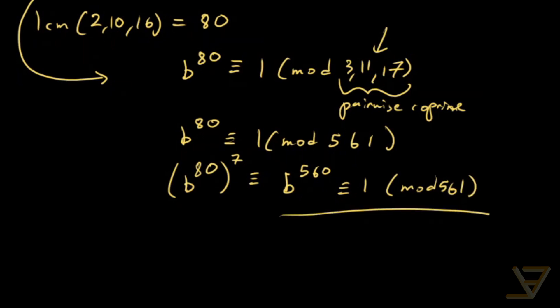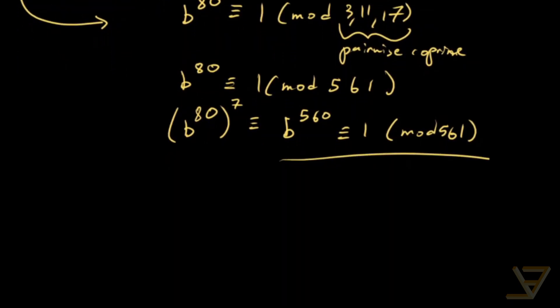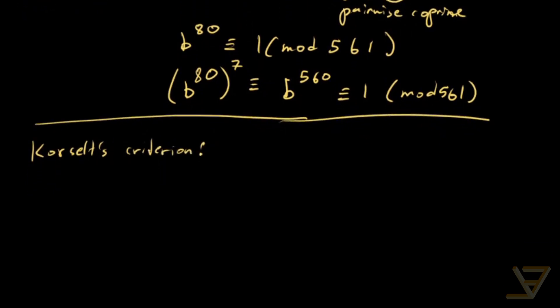Now, you might be wondering, how do we prove in general that a number is a Carmichael number? And there is a general criterion. It's called Korselt's Criterion. Maybe it should be called Korselt's Criteria because there's three criteria.